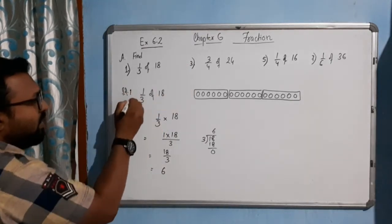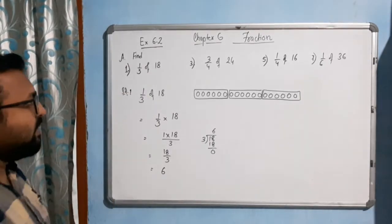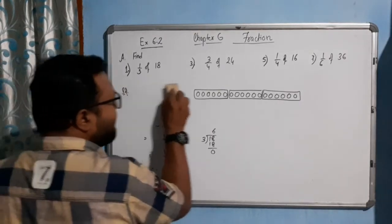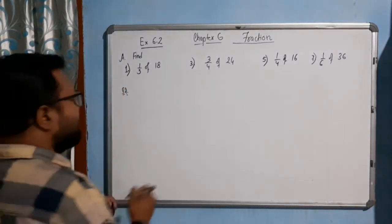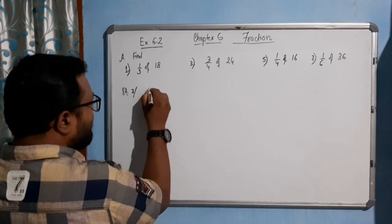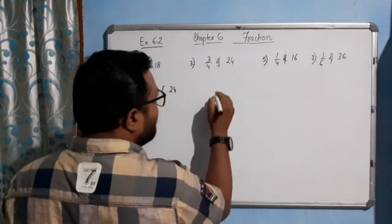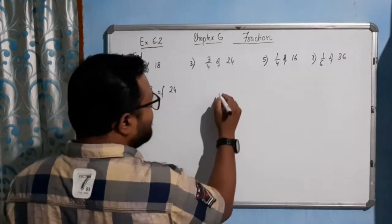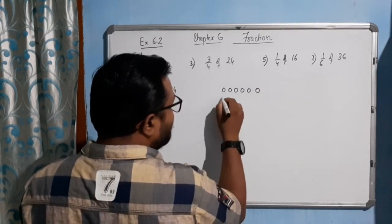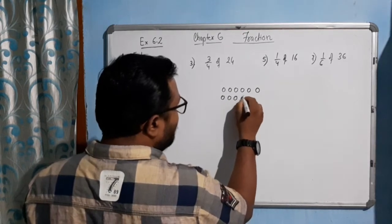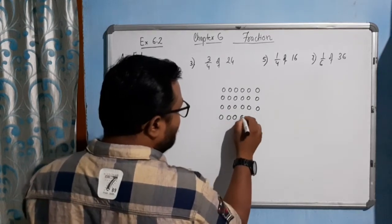This one is solution for question 1. Now come to question 3. 3 by 4 of 24. See, 24 balls. I did the calculation in my mind: 6 times 4 is 24, so 6 equal balls will be there in each of the 4 parts. Let me draw 24 balls here.